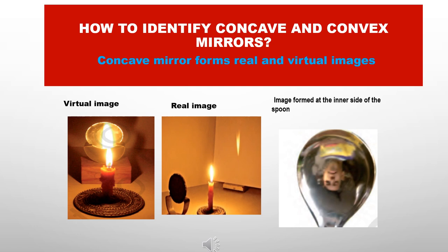How to identify concave and convex mirrors? A concave mirror is curved inwards — its center part is curved like a cave. It forms both real and virtual images. Depending on the distance between the object and the mirror, it can form different types of images. For long distances it can make real images, whereas at short distances it can make virtual images.